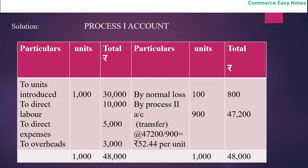The balance is transferred to process 2 account. Actual production is 900 units (1,000 − 100). The total debit side amounts to Rs. 48,000. Deducting the normal loss scrap value of Rs. 800 gives Rs. 47,200 transferred to process 2. The cost per unit is Rs. 47,200 ÷ 900 = Rs. 52.44 per unit.